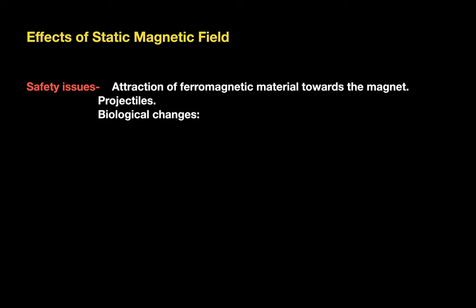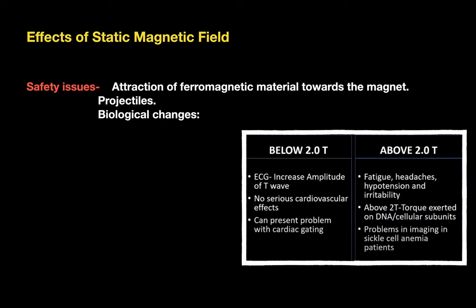Effects of the static magnetic field include attraction of ferromagnetic materials toward the magnet, causing projectile-type injuries, and producing biological changes. Below two tesla, there can be increased amplitude of T-waves, no serious cardiovascular effects, but problems with cardiac gating. Above two tesla, there can be fatigue, headache, hypertension, irritability, and problems with sickle cell anemia patients.